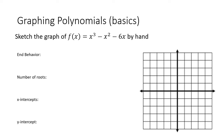We've talked about end behavior of polynomials, but how do we go about actually graphing a polynomial? In this problem, we're asked to sketch the graph of f(x) = x³ - x² - 6x. Just by looking at this, we know a few things. Because this is an odd degree and the leading coefficient is positive, this graph is going to start in the bottom left and go to the top right.